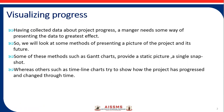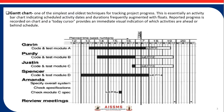The different tools available include: Gantt chart, timeline charts, slip charts, and ball chart. The first one is the Gantt chart. It is one of the simplest and oldest techniques for tracking project progress. This is essentially an activity bar chart, where activities are drawn with bars indicating their start time, end time, and duration. This bar chart indicates scheduled activity dates and durations, frequently augmented with floats. Reported progress is recorded on the chart, and a 'today' cursor shows where we are currently, providing an immediate visual indication of which activities are ahead or behind schedule.